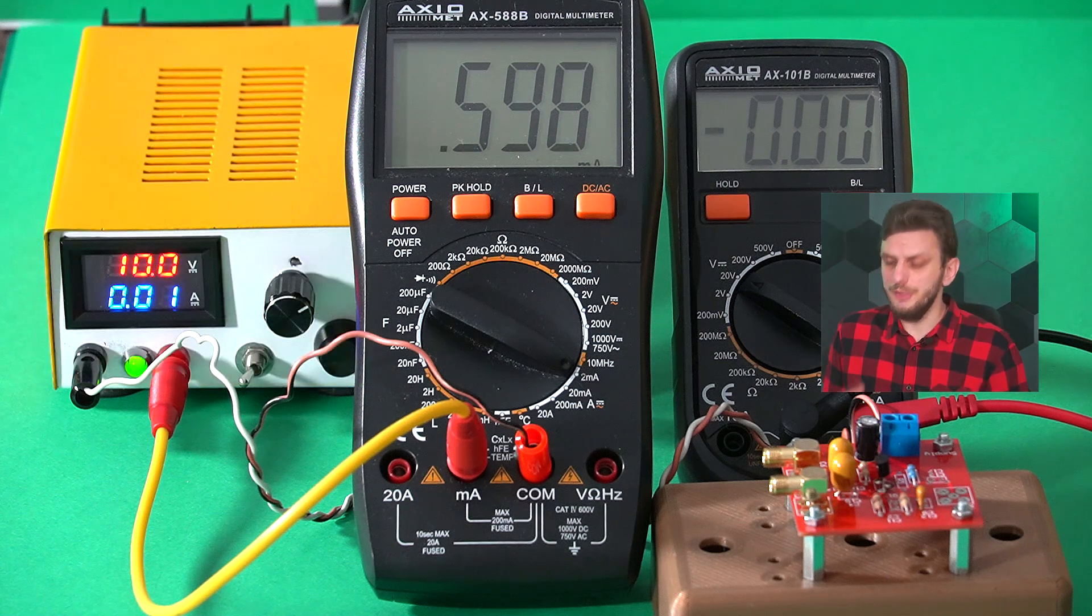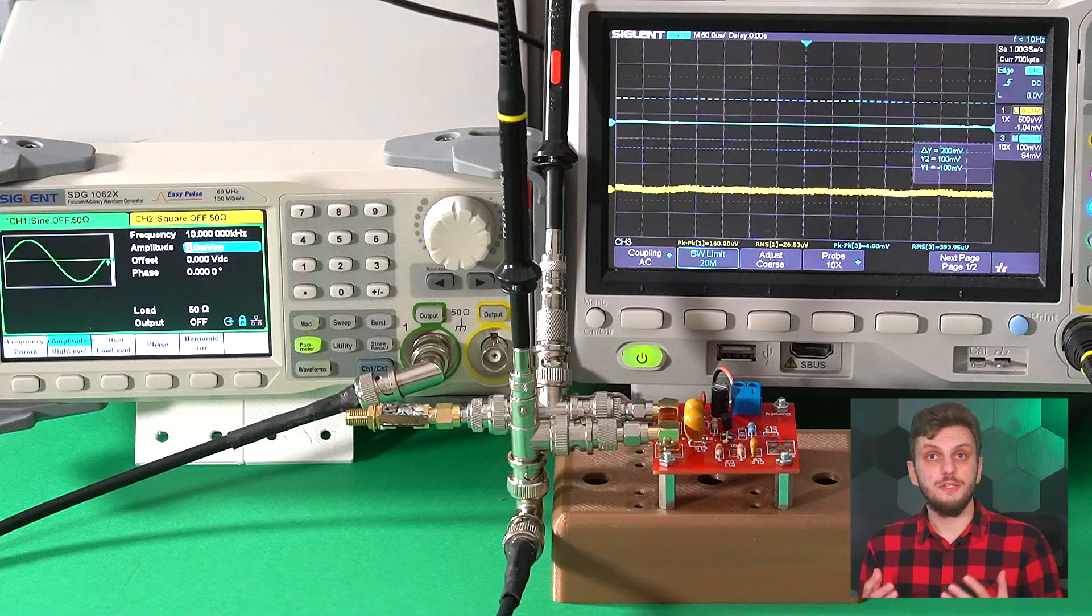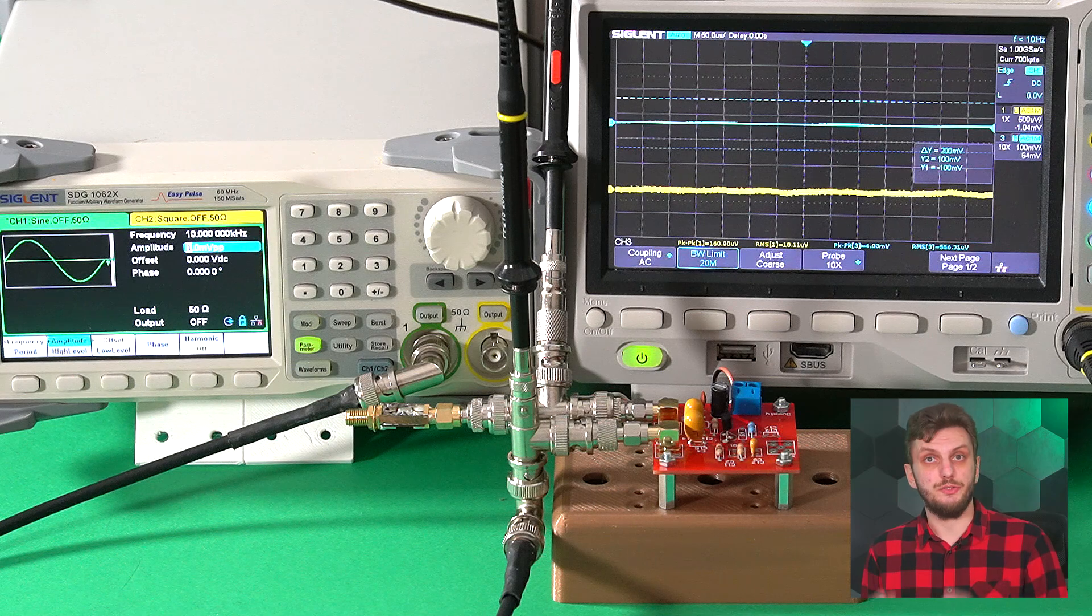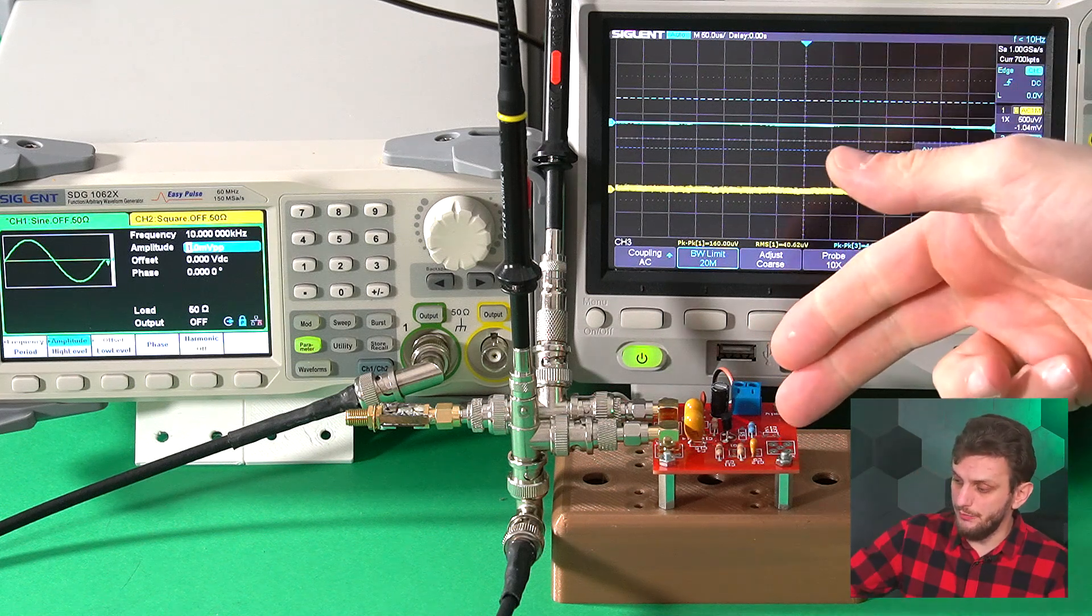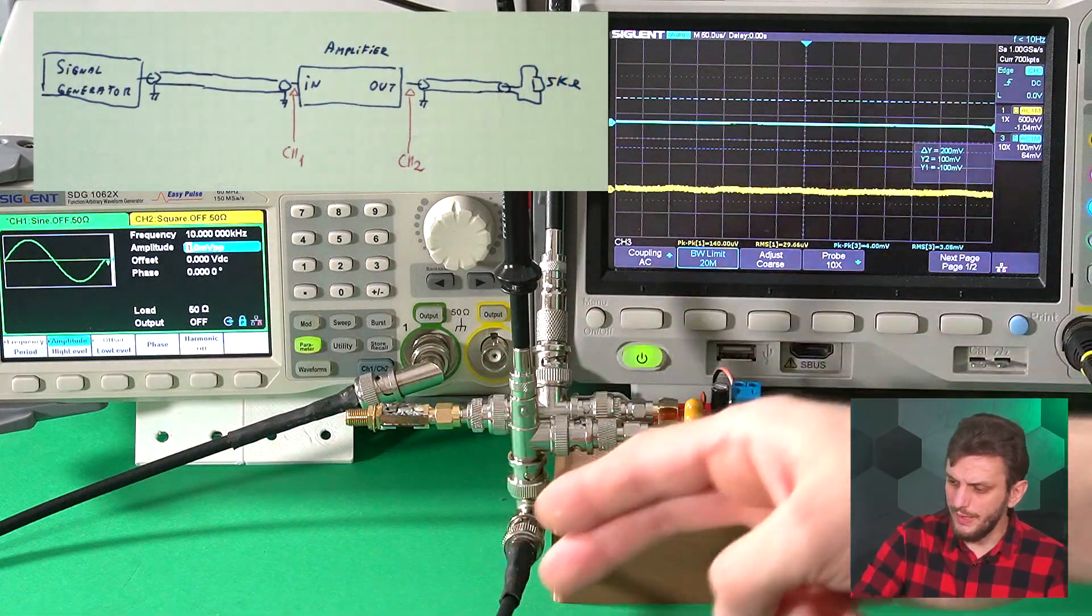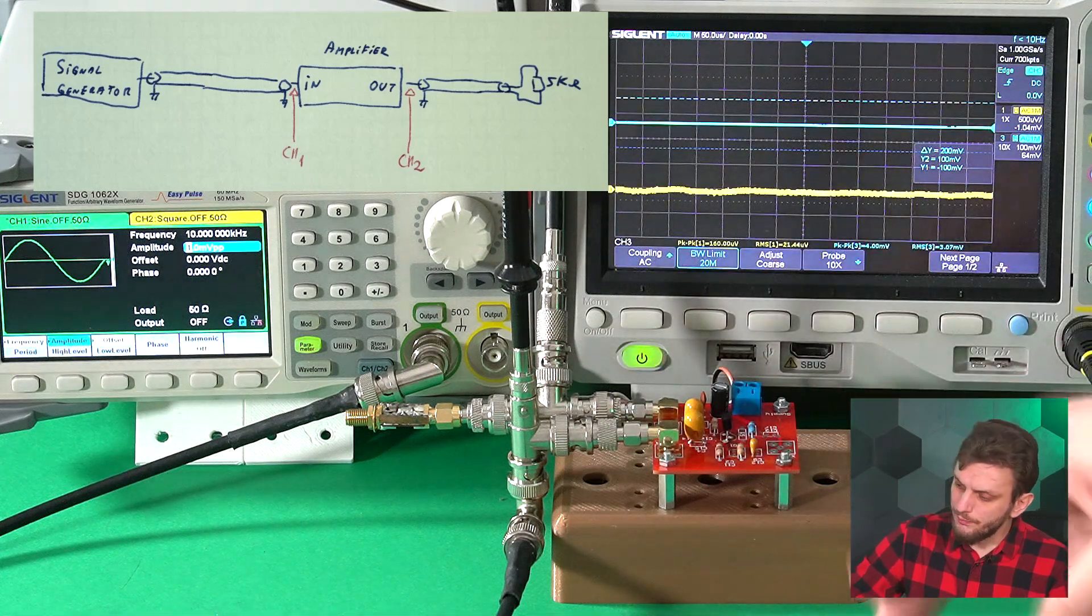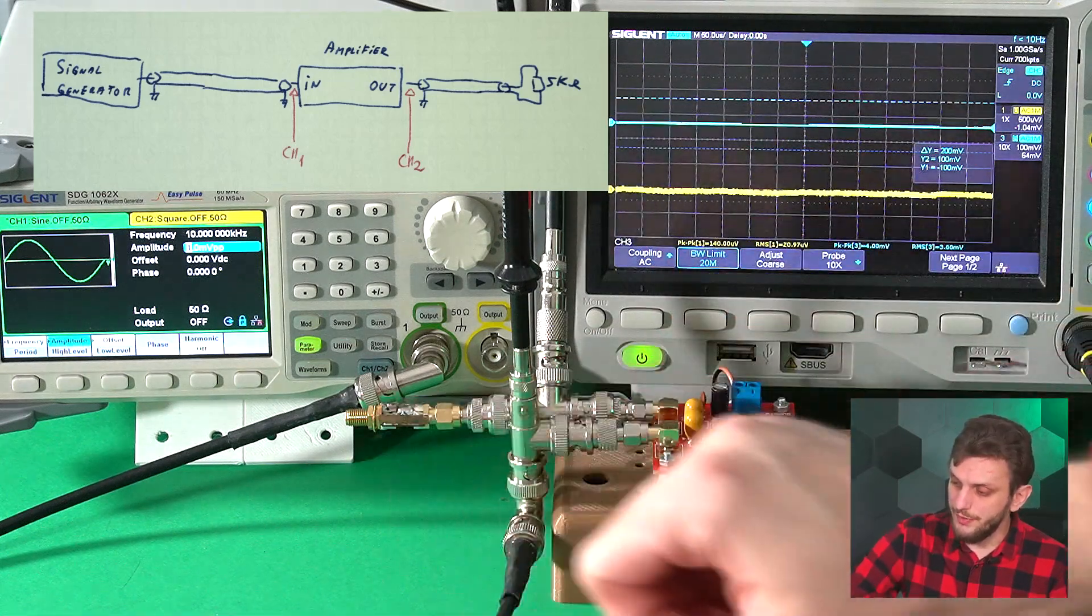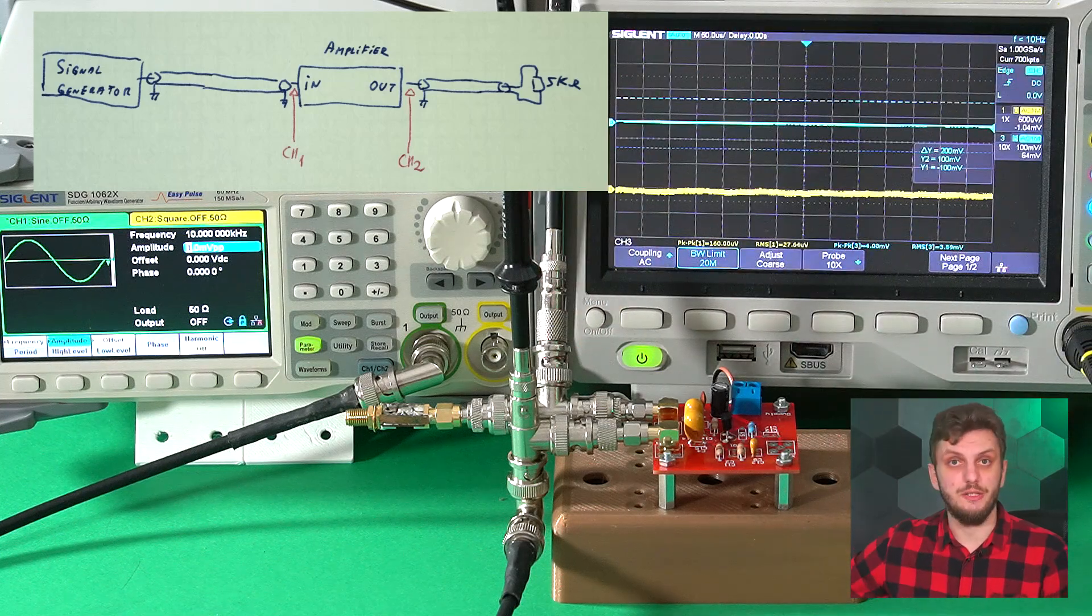In general, the circuit is behaving close to what we were getting from the simulation. Next, we can have a look at the signals that pass through the amplifier, and for that I prepared this other setup, in which my amplifier is connected on the input side to the signal generator, and I'm also monitoring this line using the yellow channel of the oscilloscope, and then on the output I have a 5 kilo ohm load, and I'm also monitoring the output using the blue channel of the oscilloscope.